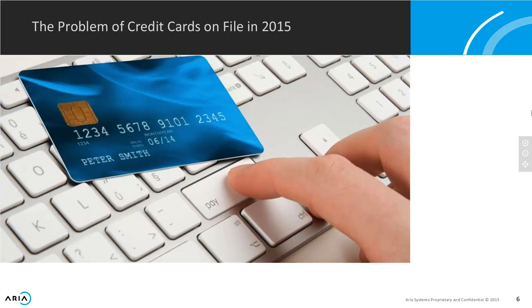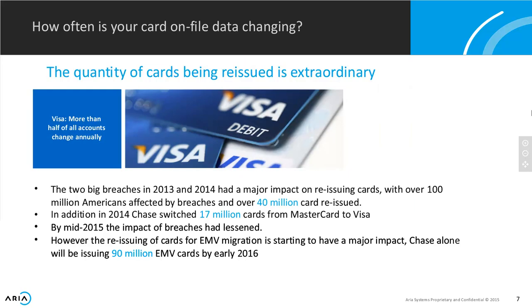The other thing is the EMV chip. What that means is credit card issuers have had to go out and reissue cards with chips on them in 2015 — the deadline was October but it's still happening. For someone with reoccurring credit cards on file, Chase alone switched 17 million cards from MasterCard to Visa in 2014. If those cards were on file, they changed — maybe just the expiration date, maybe the actual card number. That card on file is no longer going to be valid.